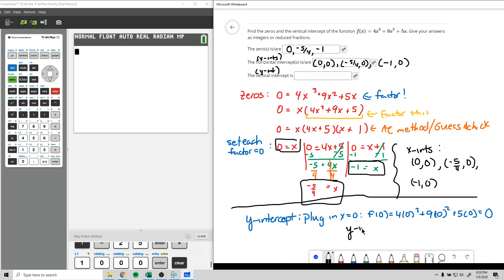So the y-intercept is x is 0 and y is 0. And for y-intercepts, there can only be one. And that's it. That's how we do it.